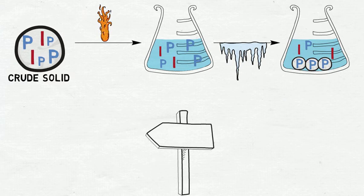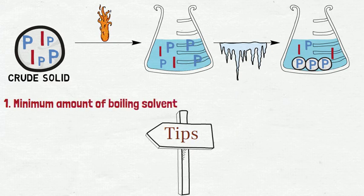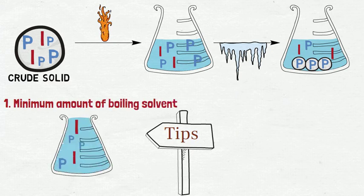Let's go over a few tips for successful recrystallization. First, we need to add a minimum amount of boiling solvent to make a saturated solution. If we use too much solvent, the solution will be too dilute and the product will not precipitate.